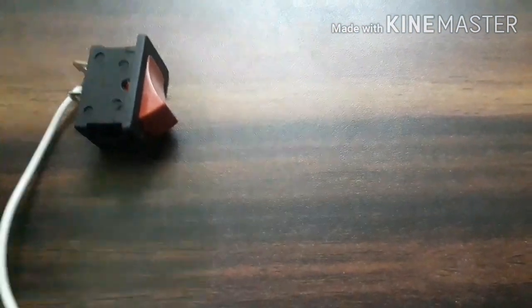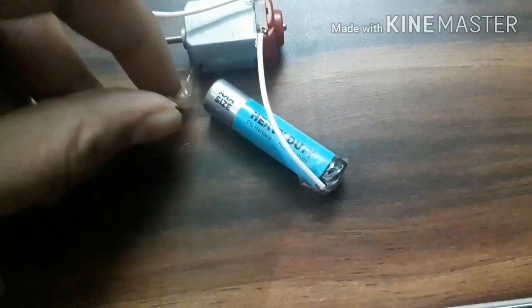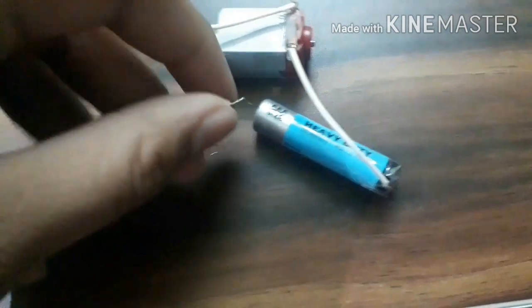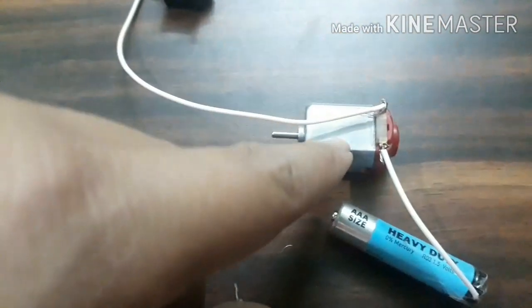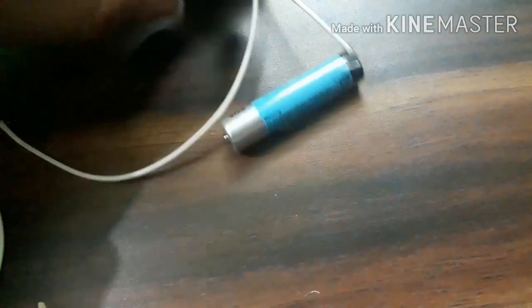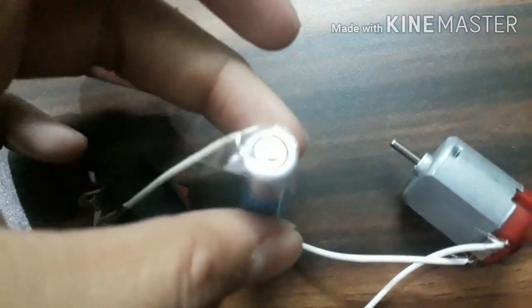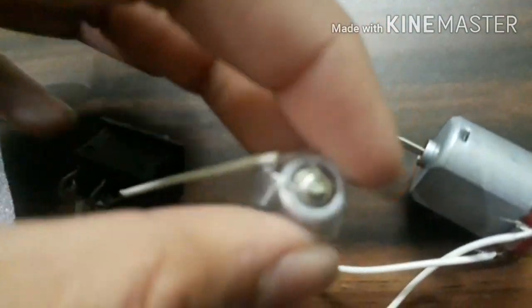And now what we have to do is to connect this portion of the wire to the switch like this. And now we will connect this to the cell's other portion with the help of the tape again.